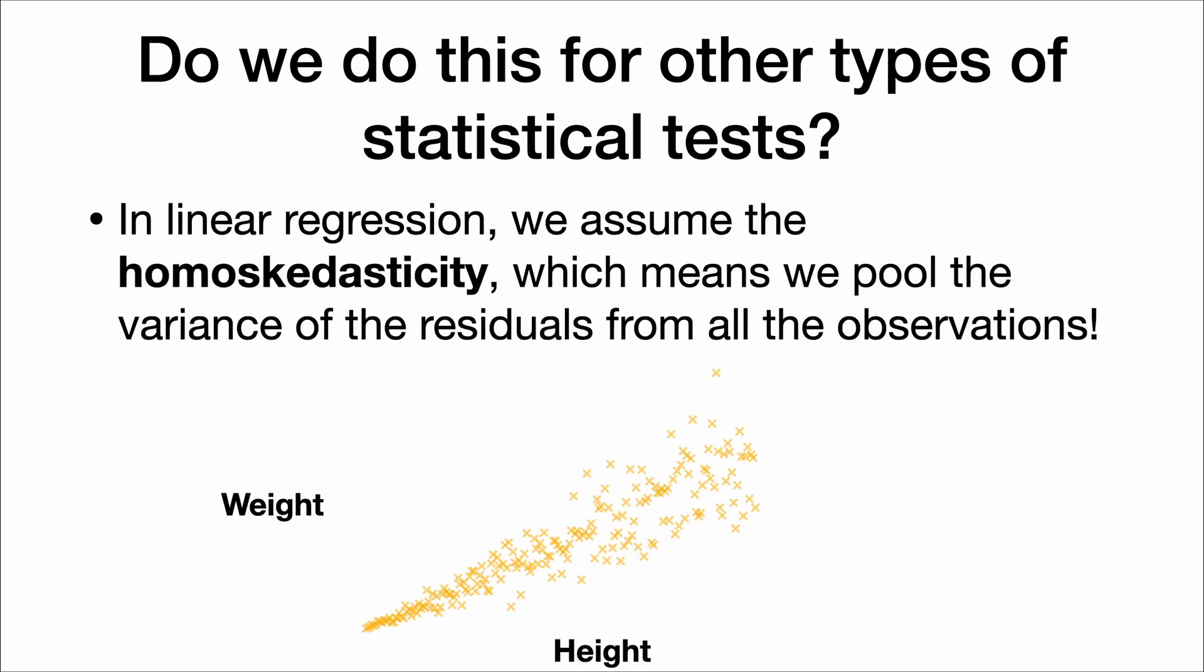We also do this in linear regression, where we assume homoscedasticity, which means we pool the variance of the residuals from all the observations. Here's the relationship between height and weight. For newborn babies, there's very little variation in weight, but for someone who's six feet tall, there's a lot of variation. So how much variation is there? Well, it obviously depends on your height.